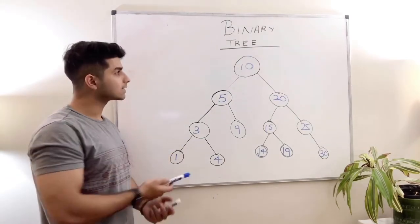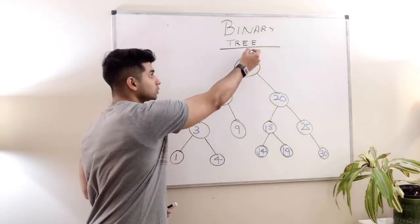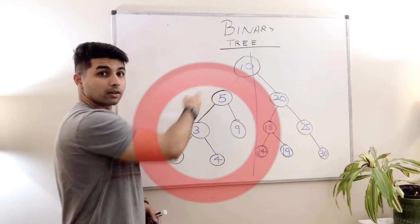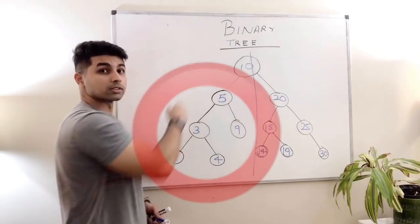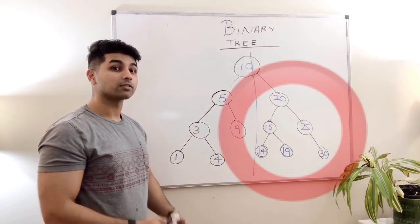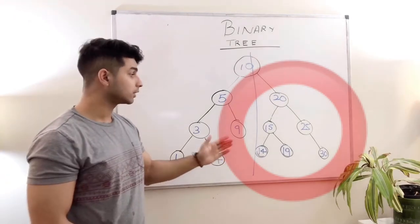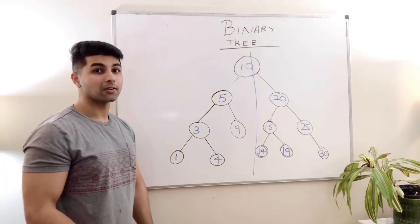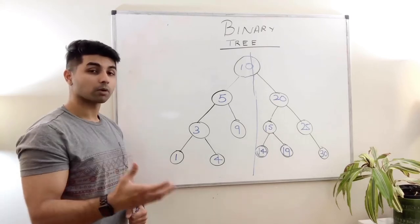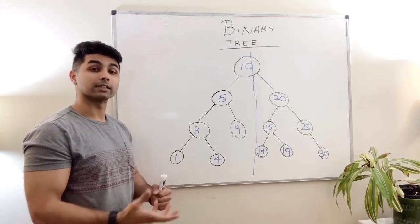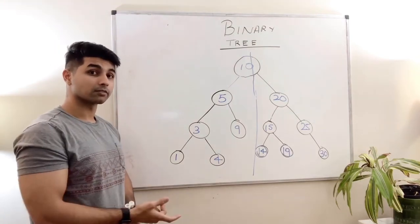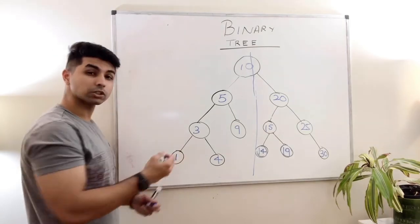This right here is called a binary search tree. Do you see something very interesting? If I draw a line in the middle of this tree at the root node, all of the values on the left side are lesser than the root node value — 5, 3, 9, 1, 4 are all lesser than 10. But on the right side, all values are larger than 10: 20, 15, 25, 14, 19, and 30. This unique property of how values are placed in the tree defines what a binary search tree is.